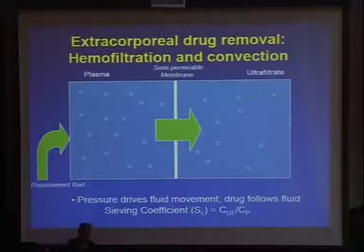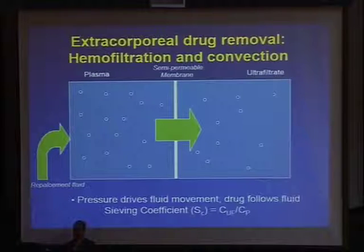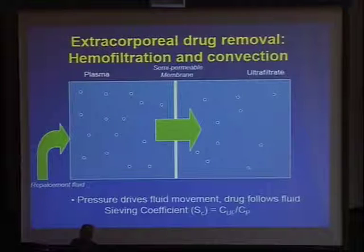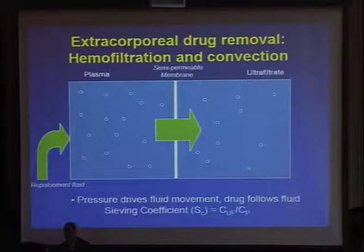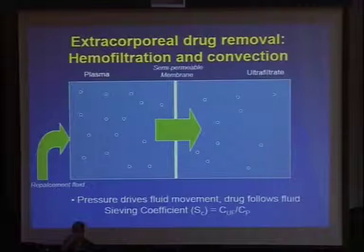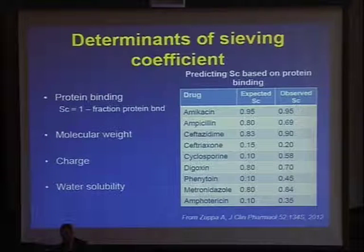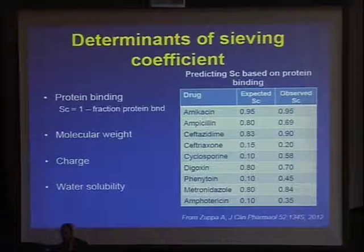For hemofiltration, the transmembrane pressure will drive fluids across the hemofilter, and with it the drug will follow — this we call solvent drag. The drug is dragged along with the water in response to the high pressure. The key determinant of a drug's ability to cross the hemofilter is the sieving coefficient, which is the concentration in the ultrafiltrate divided by the concentration in the plasma. When the sieving coefficient approaches one, the drug can easily pass — for example, ceftazidime is 0.9 and imipenem is 0.8, meaning these drugs pass easily. Ceftriaxone and cyclosporin have a low sieving coefficient.